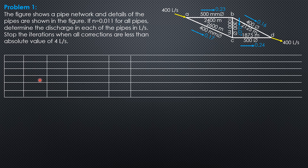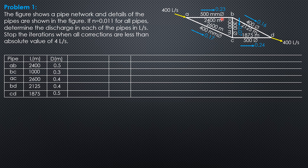Let's tabulate. The pipe names are AB, BC, AC, BD, and CD. The lengths in meters are: AB = 2,400; BC = 1,000; AC = 2,600; BD = 2,125; CD = 1,875. The diameters in meters are: AB = 0.5, BC = 0.3, AC = 0.4, BD = 0.4, and CD = 0.5.